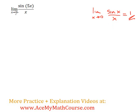So what do we do here? Well, we're going to get started by just multiplying top and bottom by 5. So I have 5 sine of 5x over 5x.